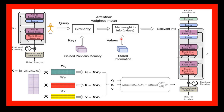To understand how transformers work, let's continue with the income tax example. Imagine you are a tax expert trying to predict how much income tax someone will owe, but this time using a transformer. The transformer would take each year's income as an input, just like the RNN and LSTM examples, but in a different way. Instead of processing one input at a time, a transformer processes the entire sequence of inputs at once. To do this, the transformer uses a special kind of attention mechanism called self-attention, which allows it to pay attention to different parts of the input sequence in a flexible way.